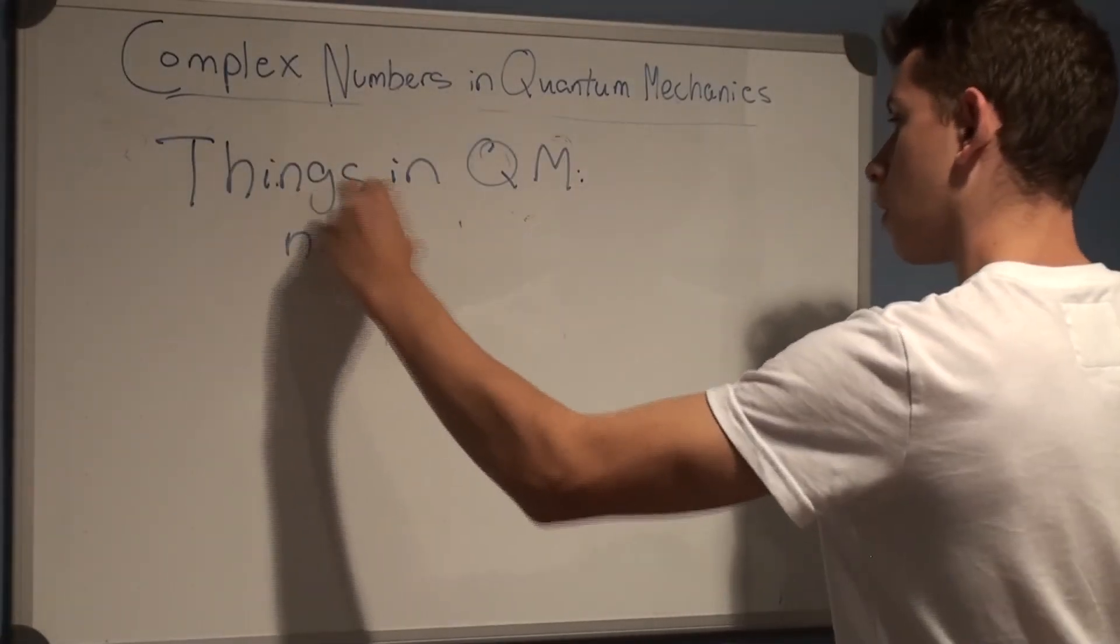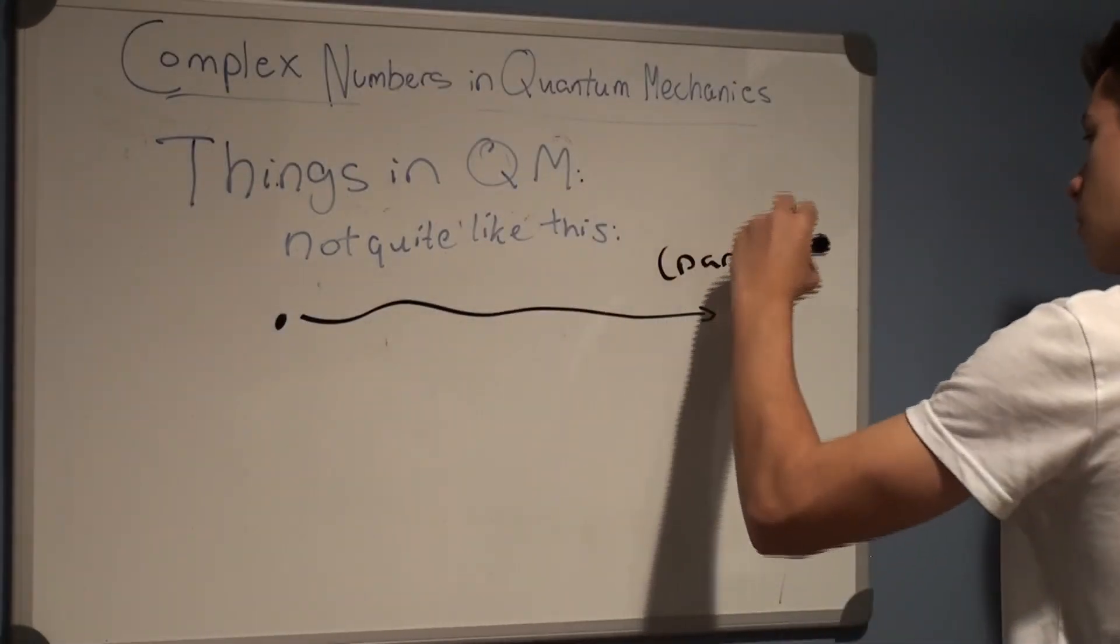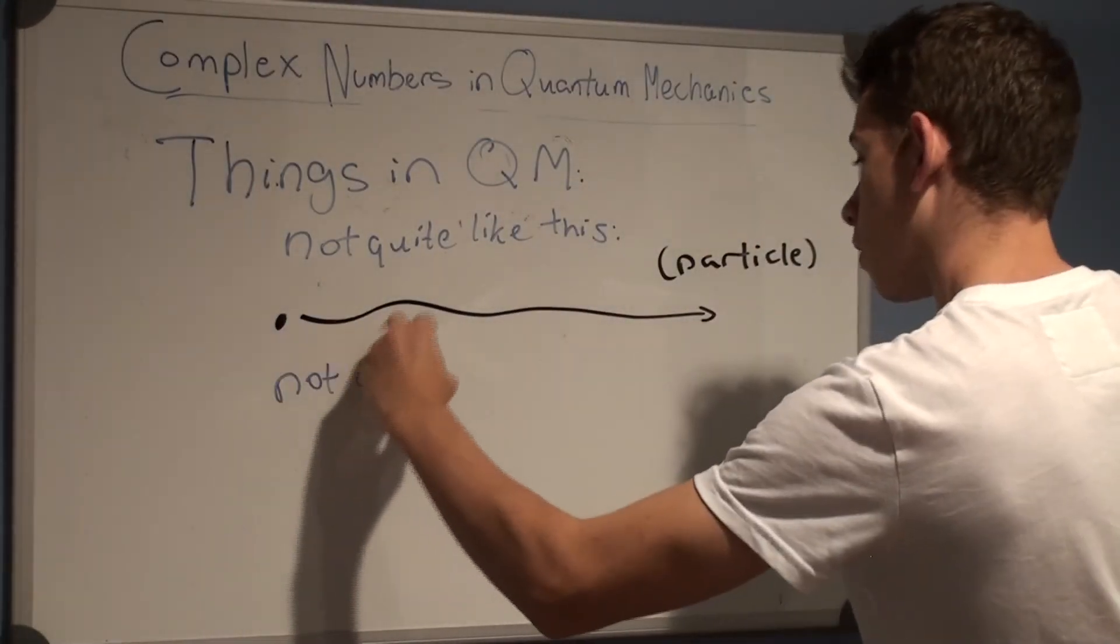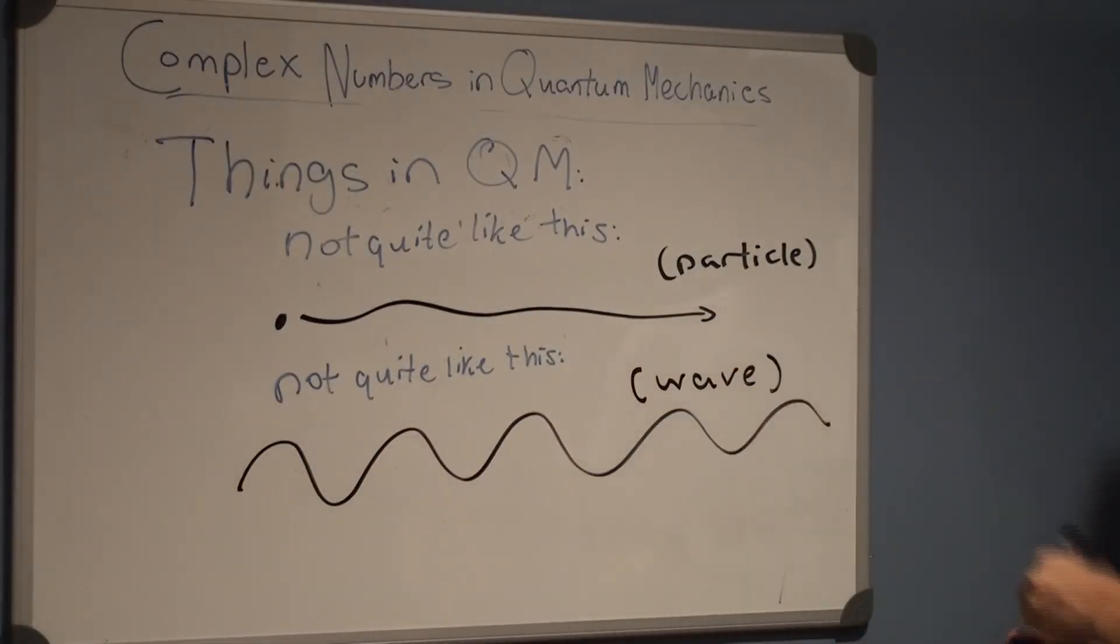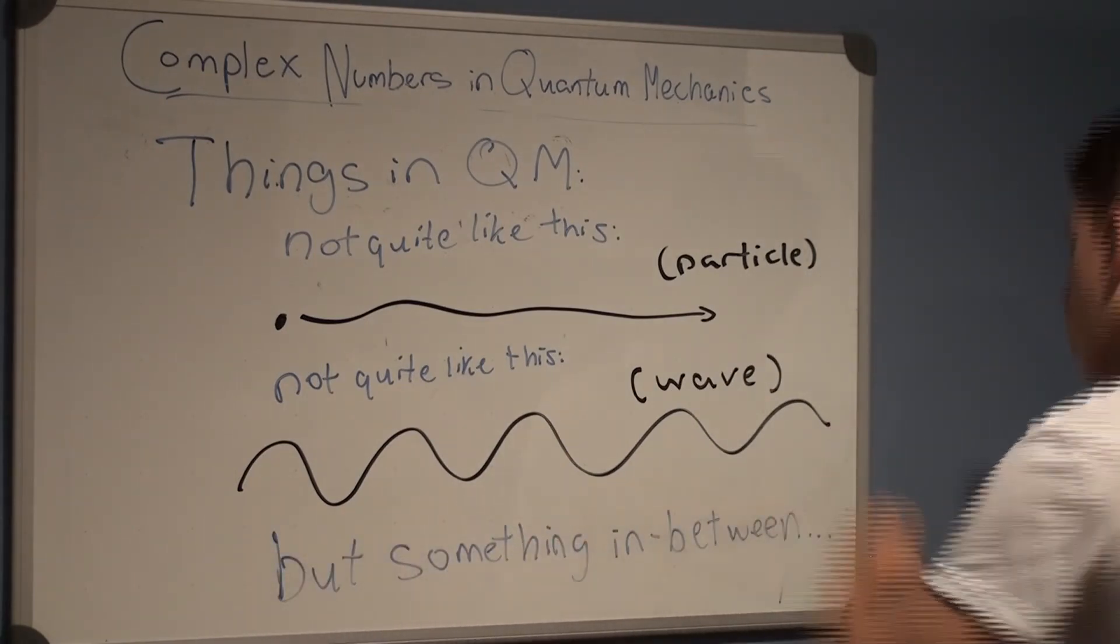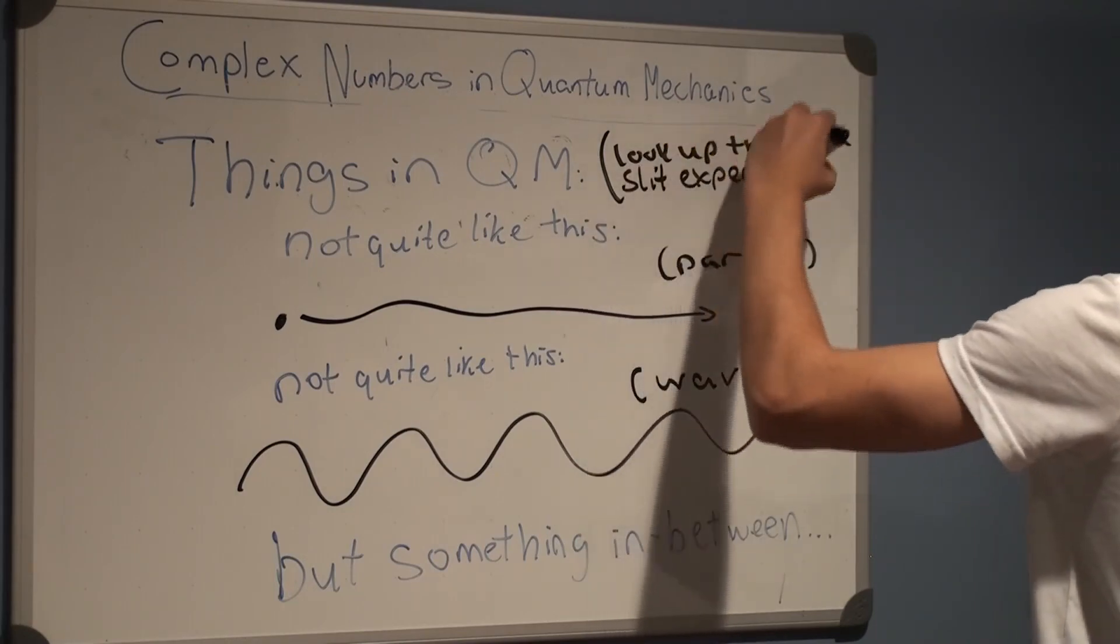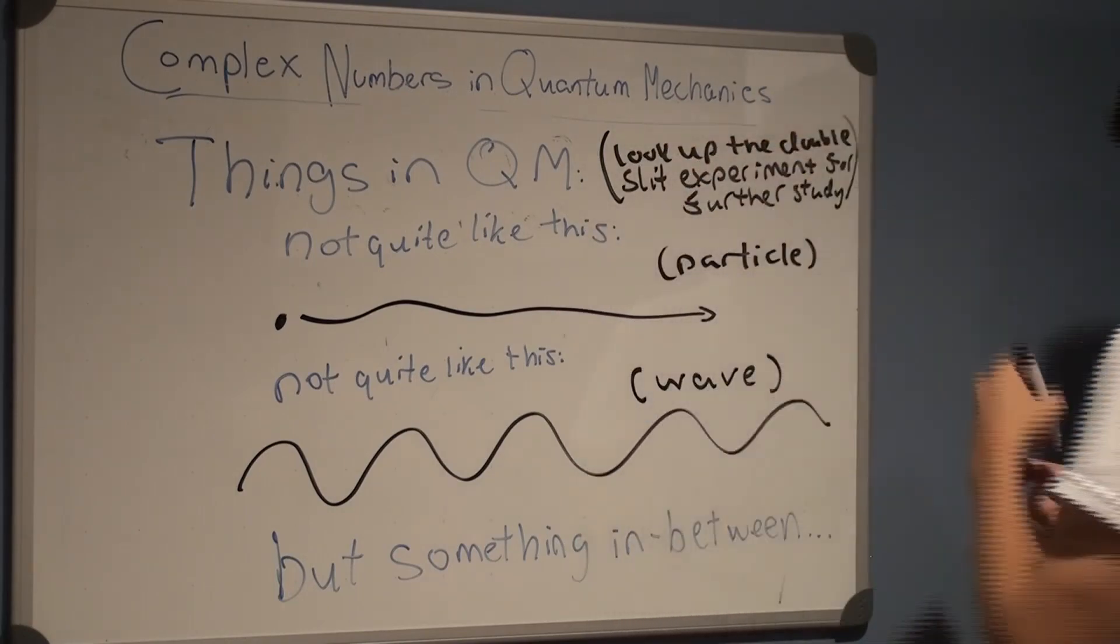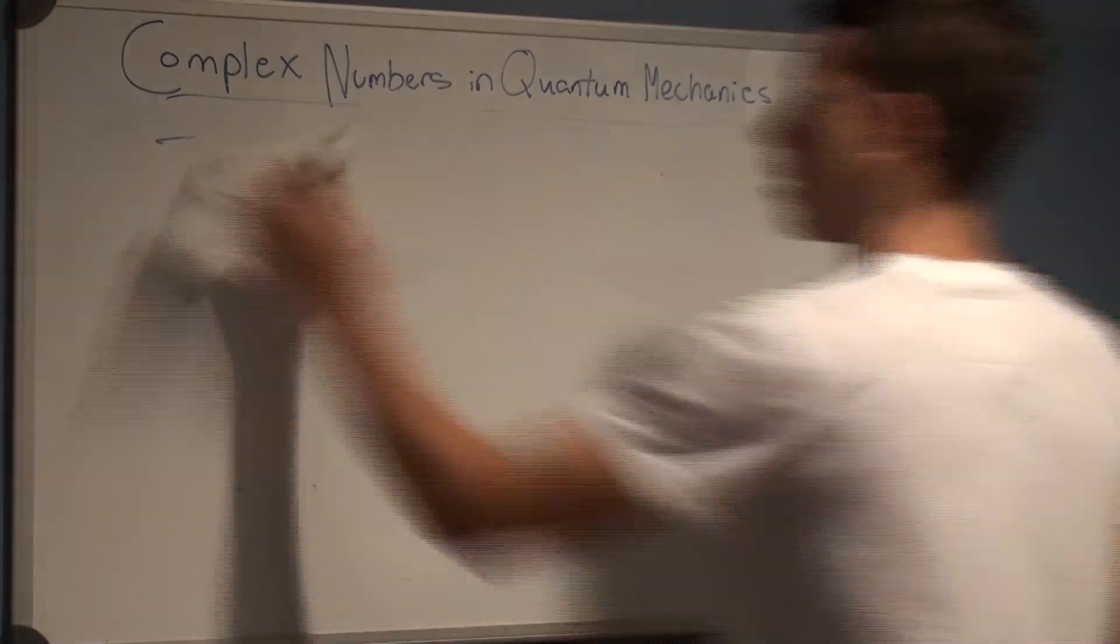This idea, coupled with another important principle that subatomic particles really don't act like particles, but act like a particle and a wave at the same time, a wave-particle duality, if you will, leads us to the wave function. The wave function, psi, of position and time, is a multivariable function that allows us to describe probabilities of behavior and motion of quantum particles.